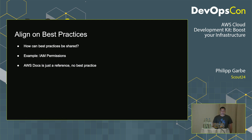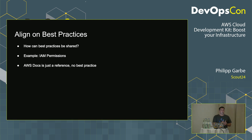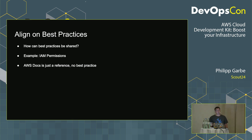It's also very hard to align on best practices, especially within a bigger company with multiple teams — it's hard to find a way to share the findings from production and the tweaks you learn when your software runs in production. The AWS docs are more of a reference — they tell you what you can do but not what is really a best practice.